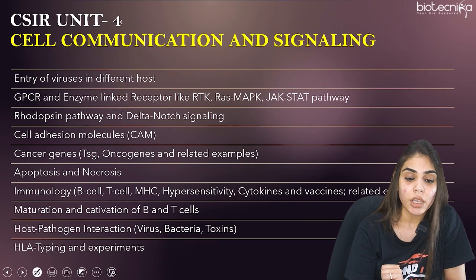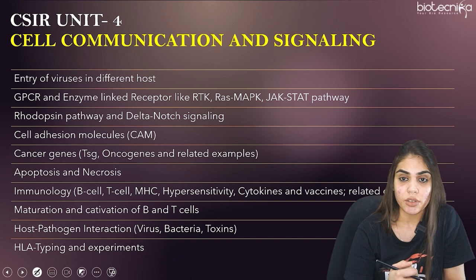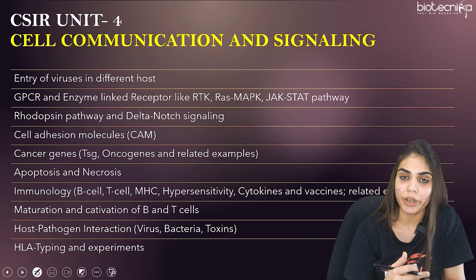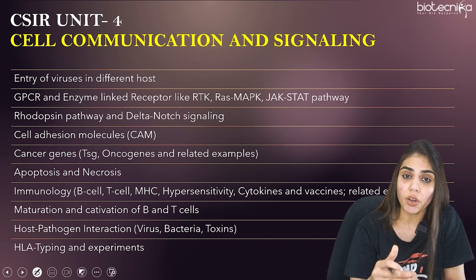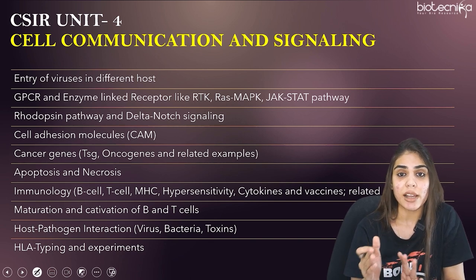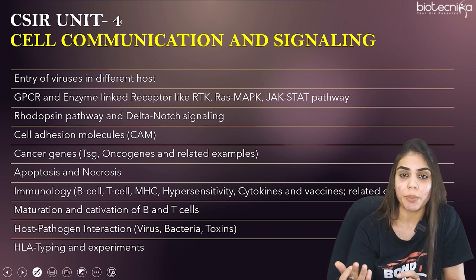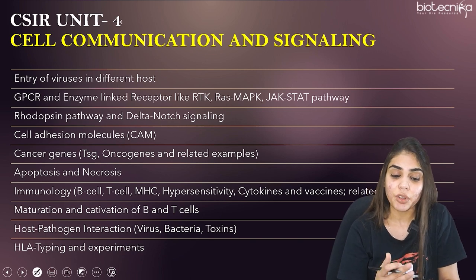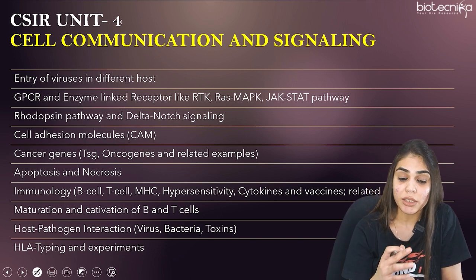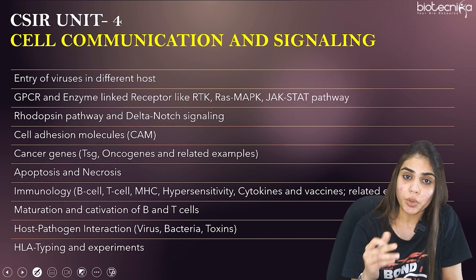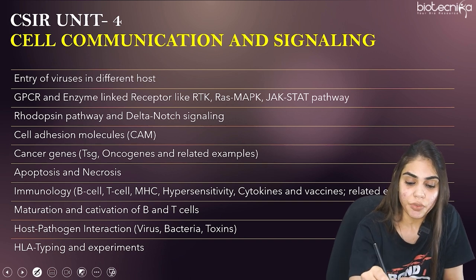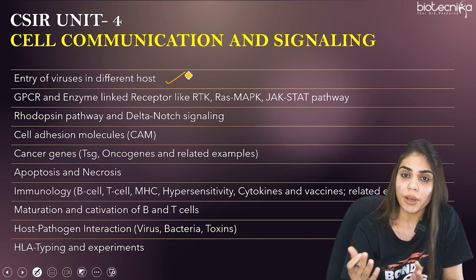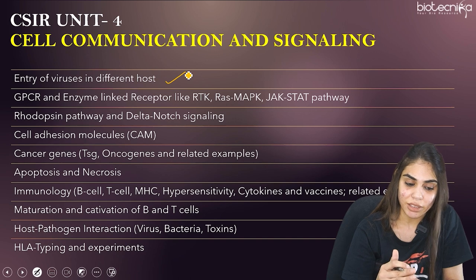Coming to Unit 4, Cell Communication and Signaling, which is asked together with Unit 2. Make sure you study all these topics. The first important topic is entry of viruses into different hosts — the strategies a virus adopts, such as membrane fusion and phagocytosis. The second is signaling mechanisms, which are very, very important and should not be left out — GPCR, enzyme-linked receptors like RTK, Ras-MAP kinase, and the JAK-STAT pathway.